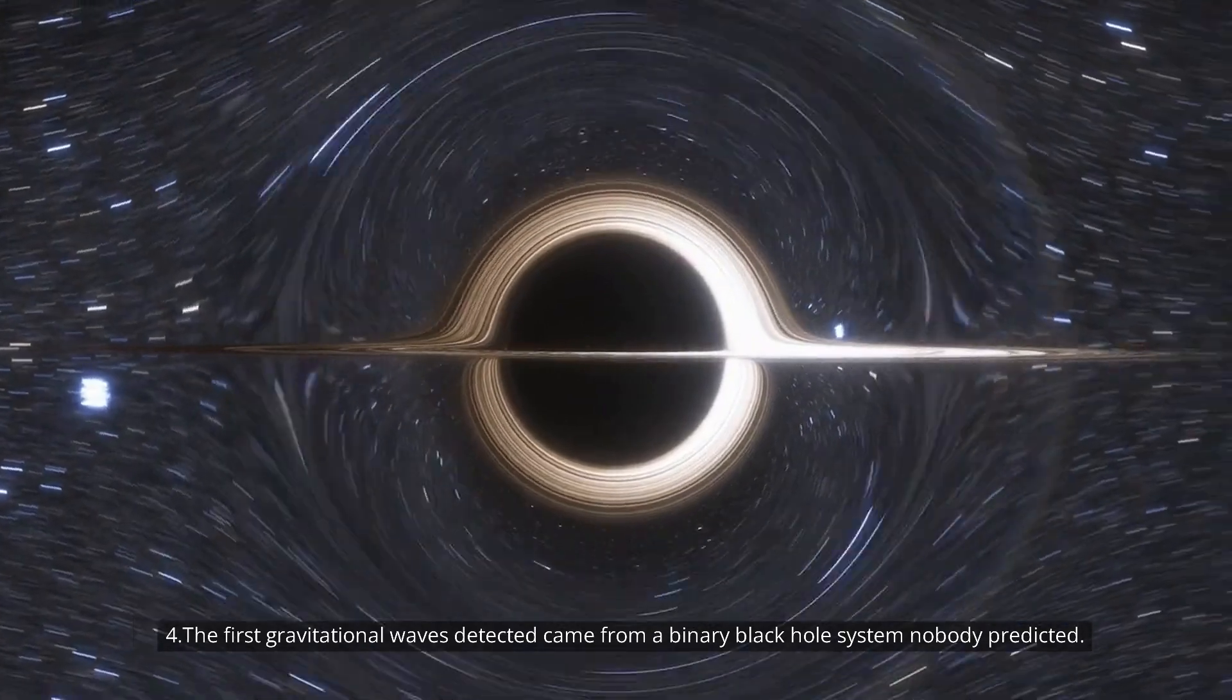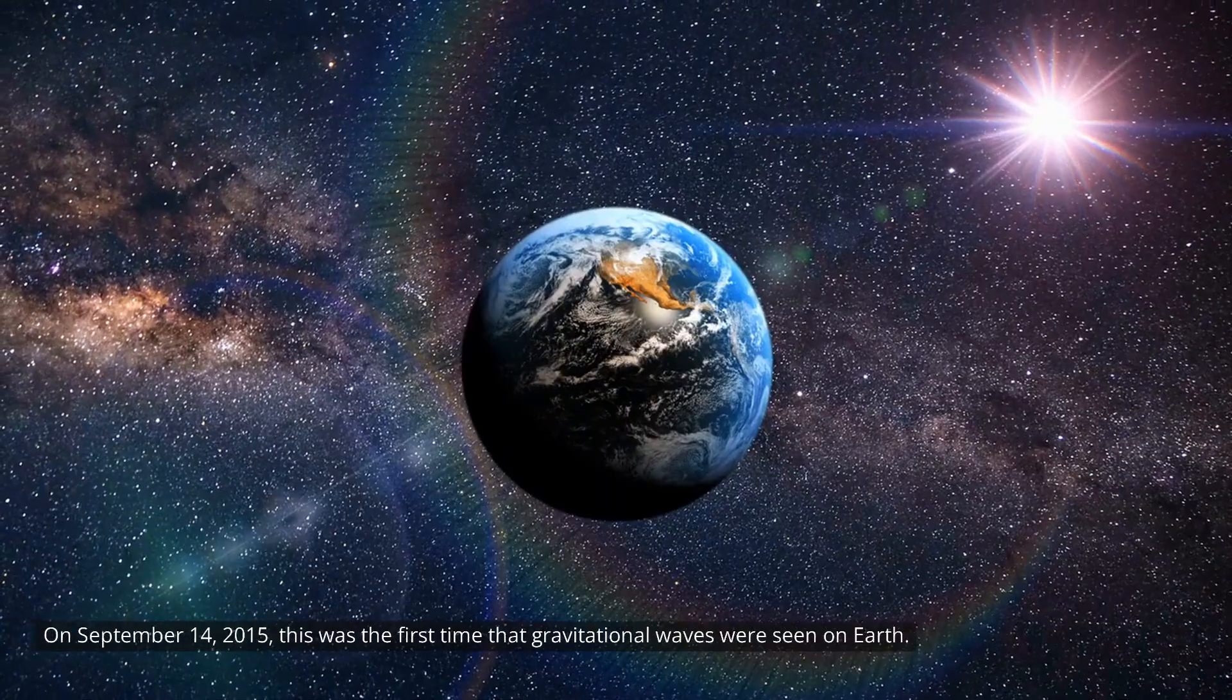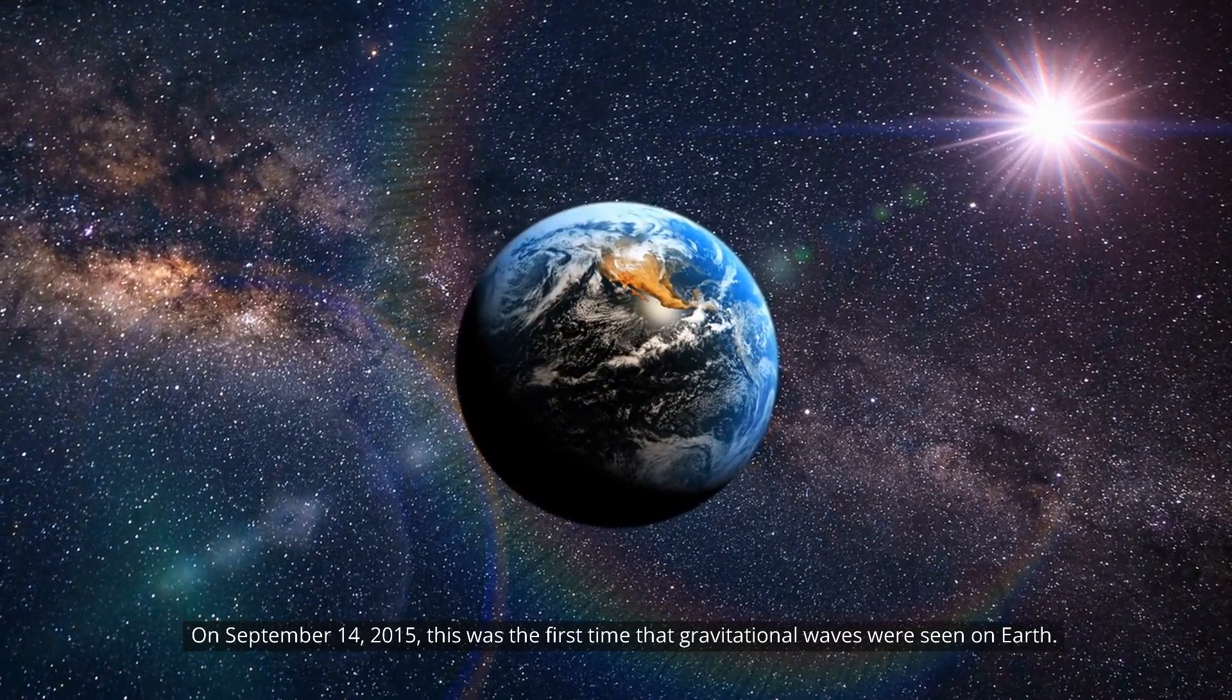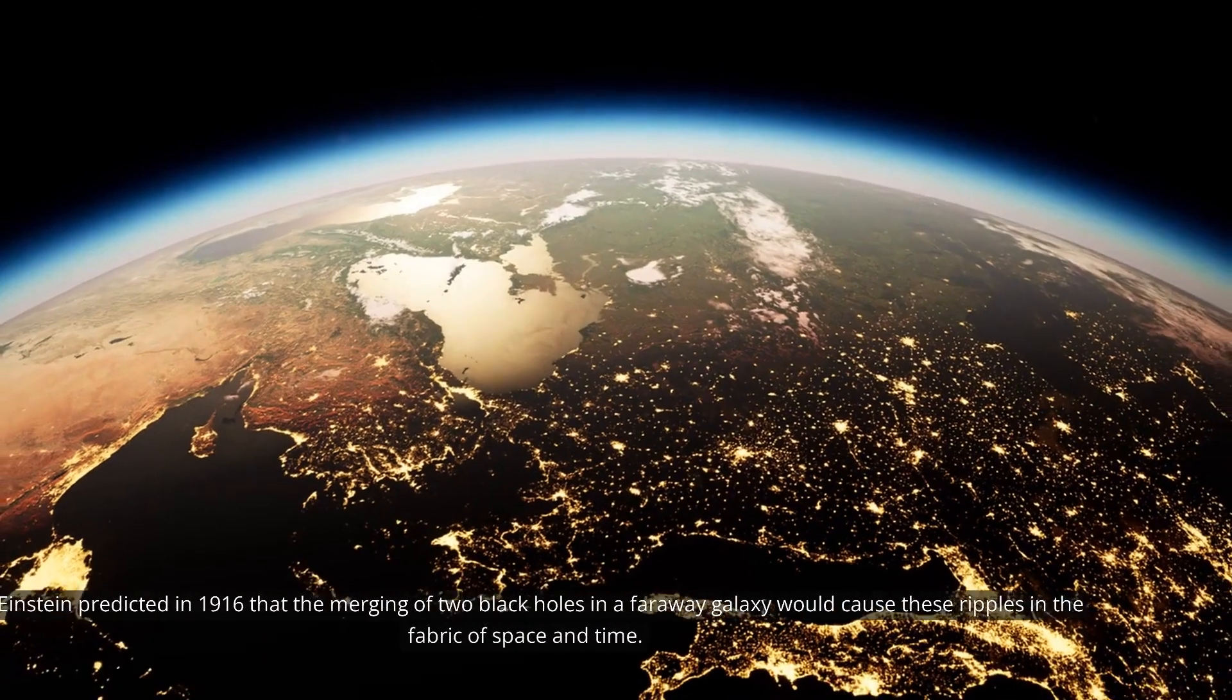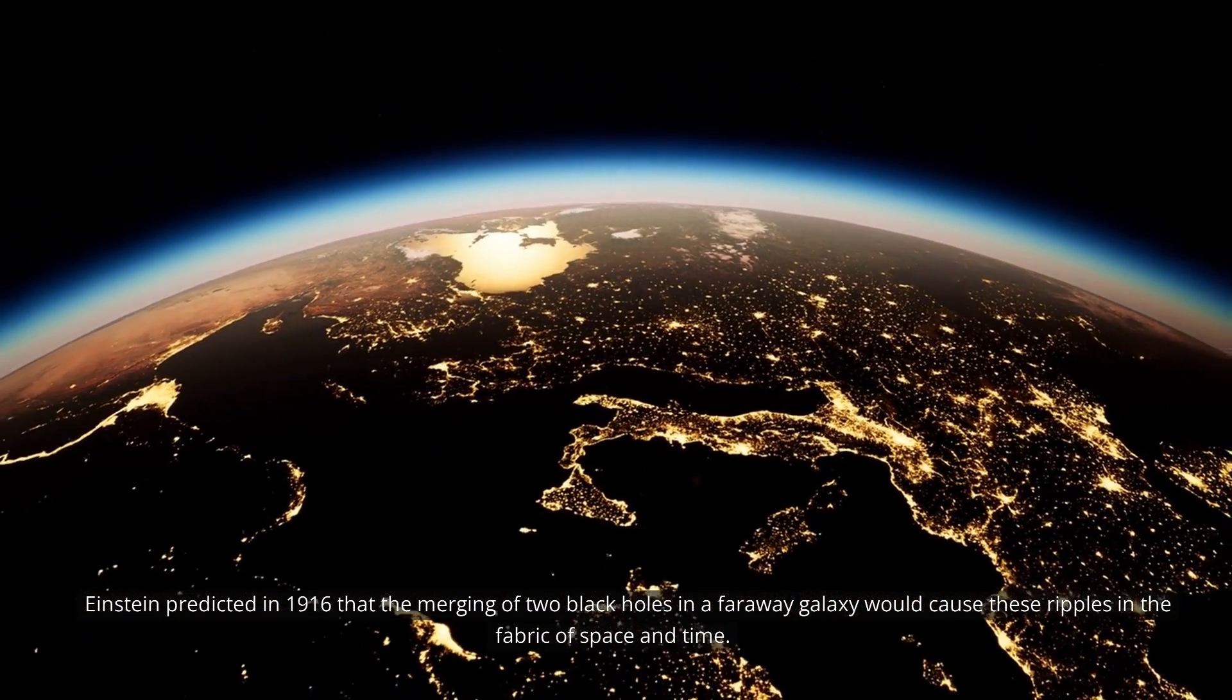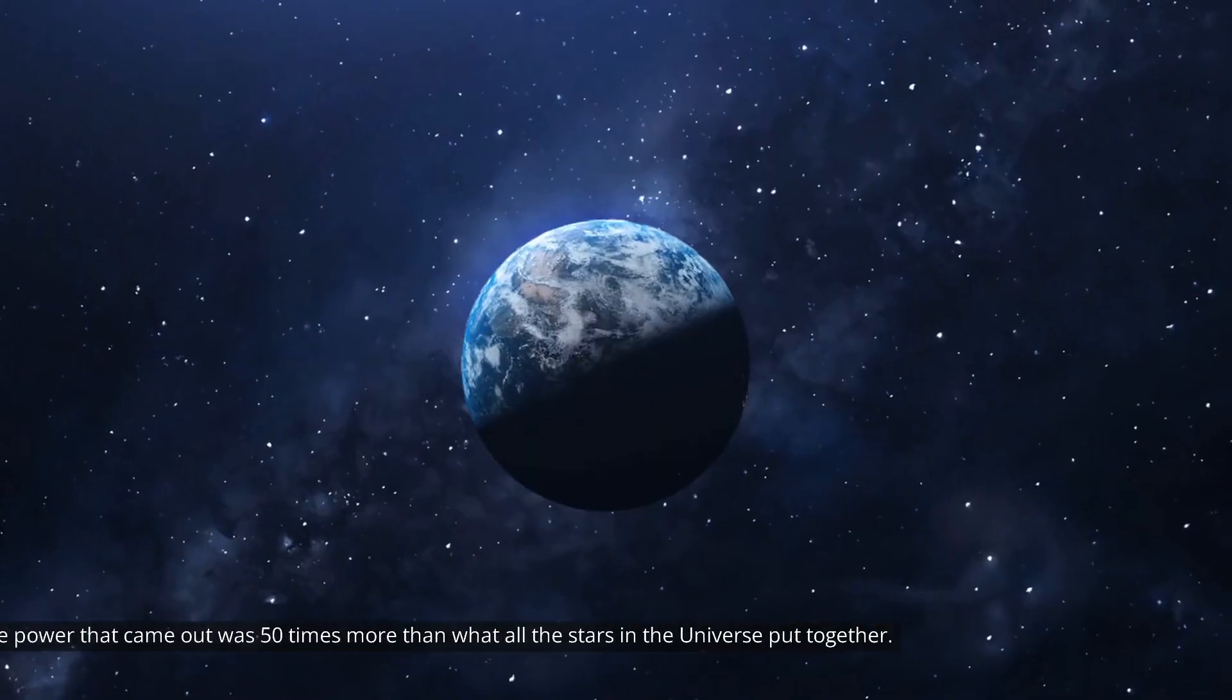Number 4. The first gravitational waves detected came from a binary black hole system nobody predicted. On September 14, 2015, this was the first time that gravitational waves were seen on Earth. Einstein predicted in 1916 that the merging of two black holes in a faraway galaxy would cause these ripples in the fabric of space and time.